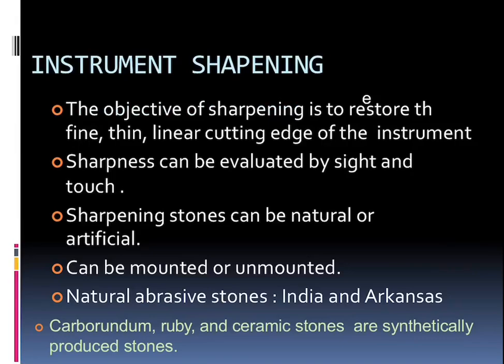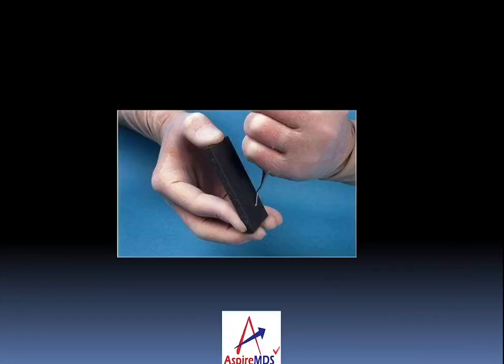Talking about instrument sharpening: it is done along the linear cutting edge of the instrument to create a fine, thin, and working instrument. Sharpness can be evaluated by sight and touch. It can be done with the help of sharpening stones, which can be natural or artificial, mounted or unmounted. Naturally abrasive stones like Indian and Arkansas stones are present, and we can also produce synthetic ones like Carborundum, ruby, and ceramic stones. If the instrument glides down without any resistance, it is considered not sharp.